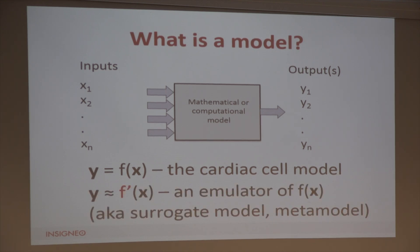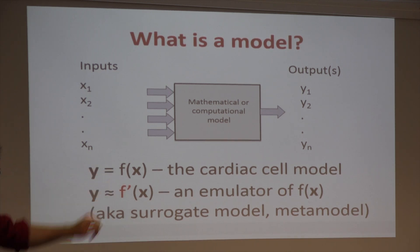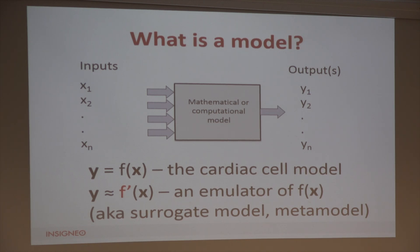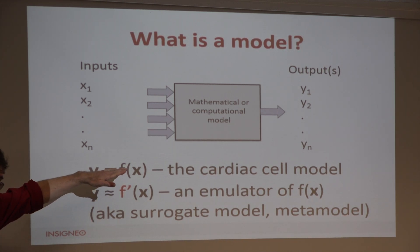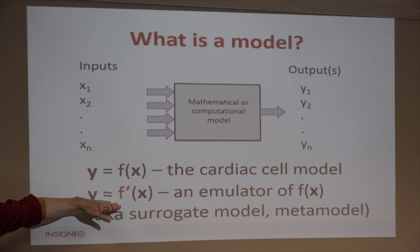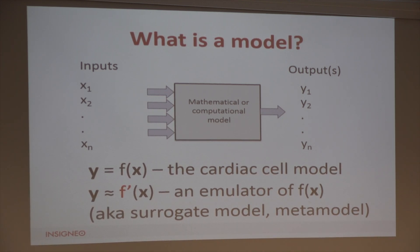If we wanted to replace that model with something else, we could do that. If we replace our function f with a different function that produces approximately the same outputs for a given set of inputs, then we've got an equivalent function. In the area I've gotten involved in, this is often referred to as an emulator — sometimes a surrogate model or meta-model. Essentially, all I'm doing when talking about an emulator is replacing the computational model with something else that produces the same output for a given set of inputs.